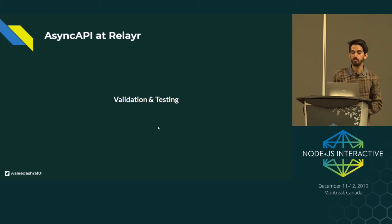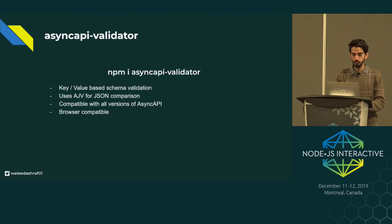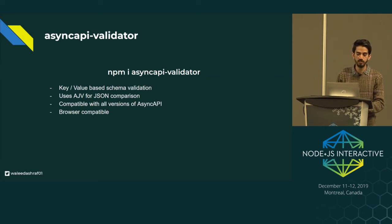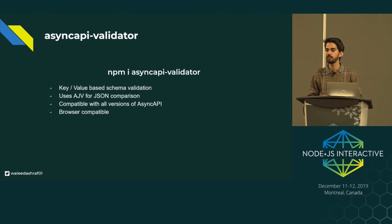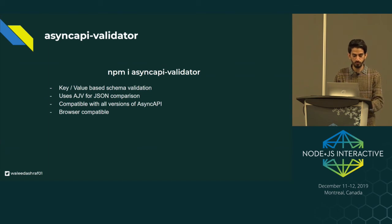Now it comes to how to validate and test if the message is right or not, or what property is missing. We wrote this library — it's open source — called AsyncAPI Validator. It's a key-value based schema validation: you give it the key of your message, pass the payload, and it validates according to the schema definition you have defined. It uses the AJV module for JSON comparison. It's also browser compatible.